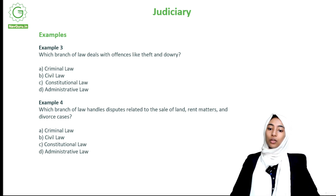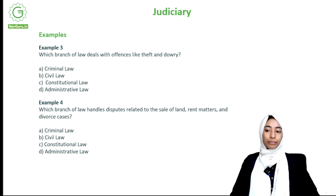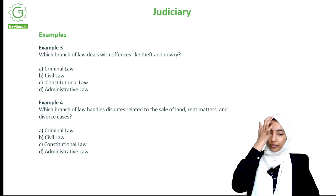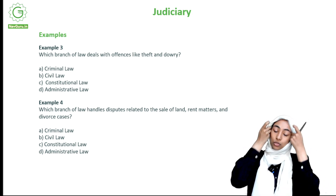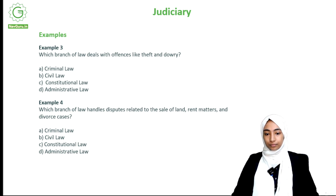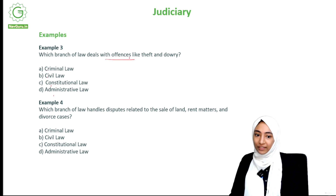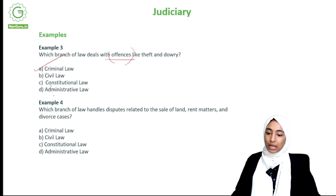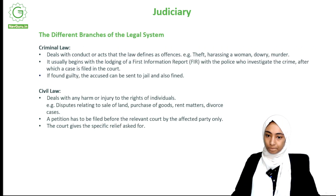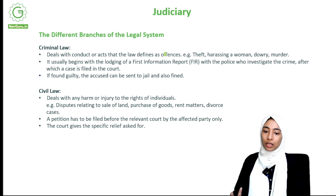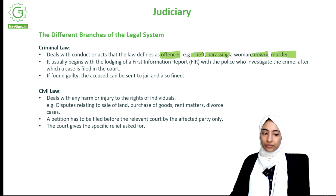Which branch of law deals with offenses like theft and dowry? The options are criminal law, civil law, constitutional law, or administrative law. The answer is criminal law. The keyword 'offenses' makes it clear — criminal law deals with conducts or acts that the law defines as offenses: theft, harassing, dowry, murder — all examples of offenses.